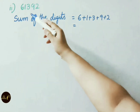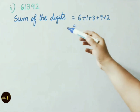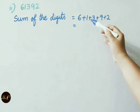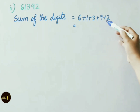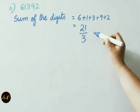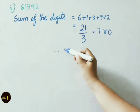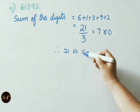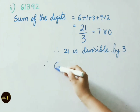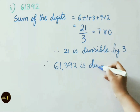Second sum: is 61,392 divisible by 3? First we do the sum of the digits: 6+1+3+9+2. 6+1=7, 7+3=10, 10+9=19, 19+2=21. So we divide 21 by 3: 3 times 7 is 21, leaves remainder 0. Therefore 21 is divisible by 3, and so the given number 61,392 is divisible by 3.